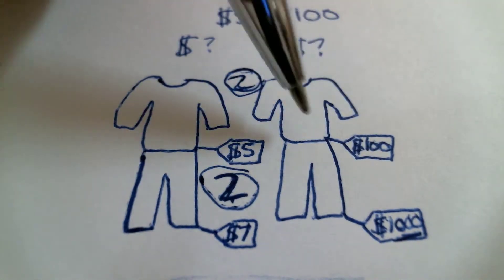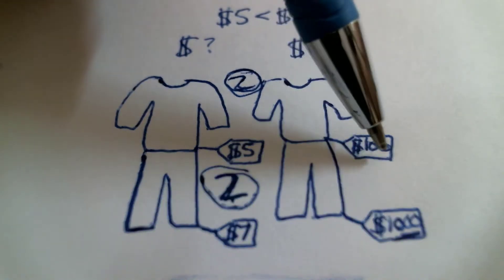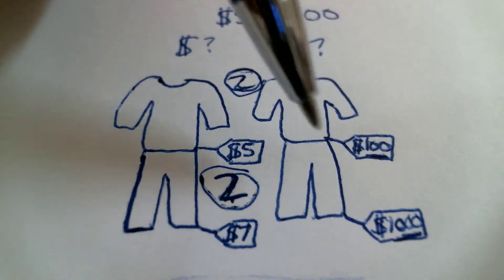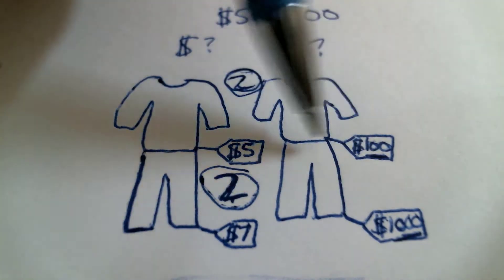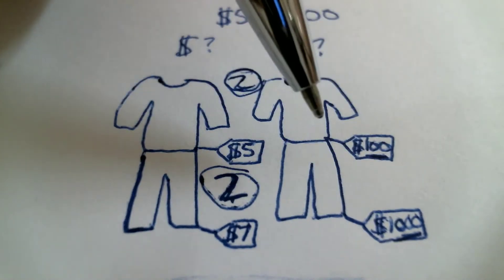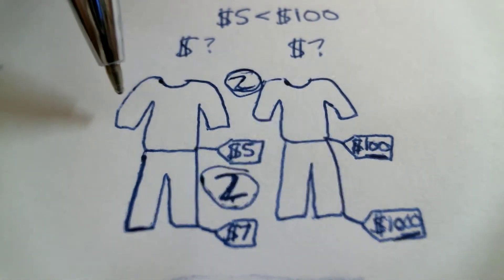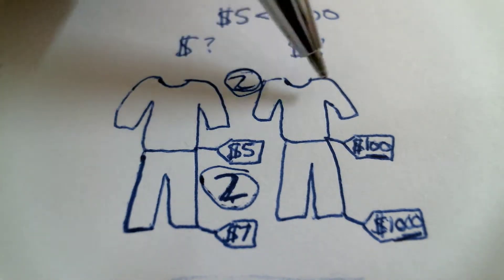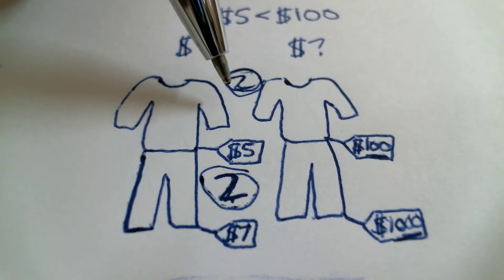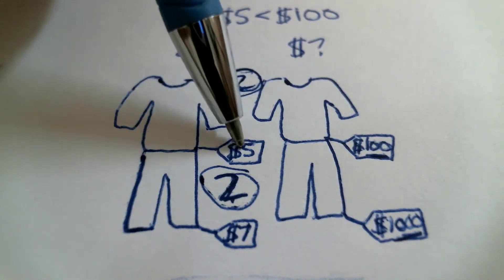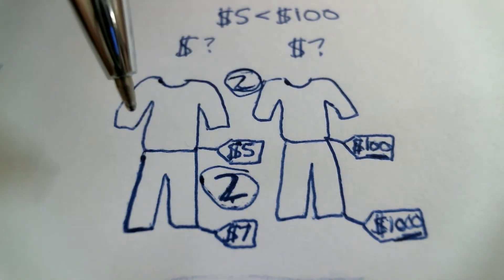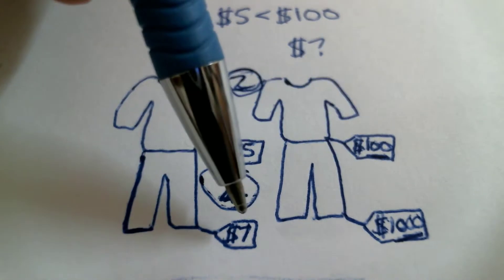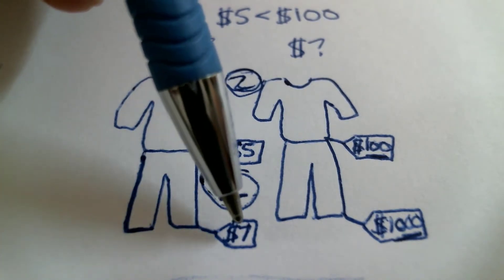Is this shirt expensive? Yes, this shirt is expensive. It costs $100. This shirt is expensive, and these pants are very expensive. Is this shirt expensive? No, this shirt is not expensive. This shirt is expensive, but this shirt is not expensive — it only costs $5. Are these pants expensive? No, these pants are not expensive. They only cost $7.